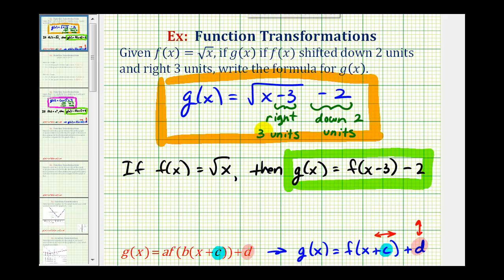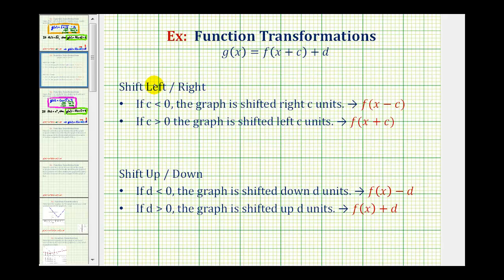To finish, let's summarize these two types of translations. To shift a graph left or right: if c is negative or less than zero, the graph is shifted right c units, so we'd have f of the quantity x minus c. And if c is positive or greater than zero, the graph is shifted left c units, so we'd have f of the quantity x plus c.